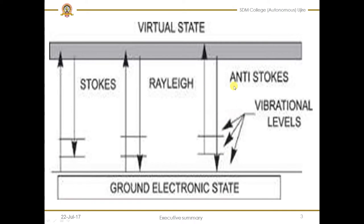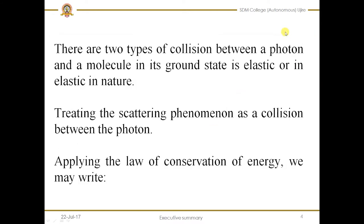In the case of the Anti-Stokes line, the molecule excites from one energy level and comes to a level lower than the original. Here the molecule excites from the E1 energy level and comes to the E0 energy level, which is lower than the E1 state. So it emits higher energy than it absorbed — this is the formation of an Anti-Stokes line.